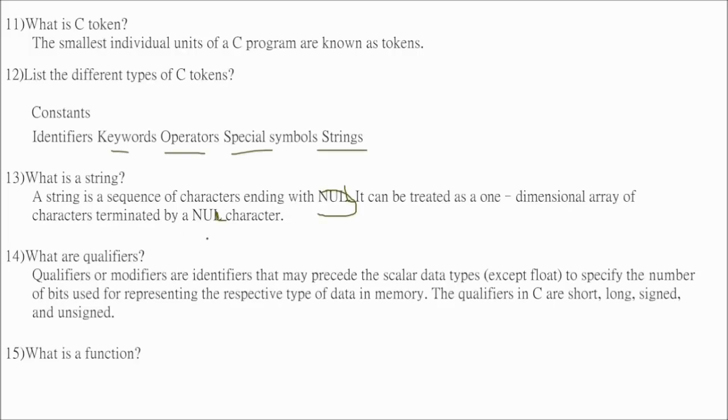So what are these qualifiers? This may be asked. Qualifiers or modifiers are identifiers that may precede the scalar data types to specify the number of bits which will be used for representing a respective type of data and memory. For example, we have short, long, signed, and unsigned. These are all the qualifiers.